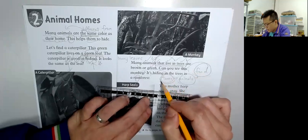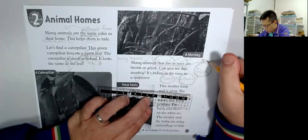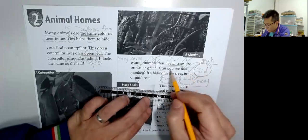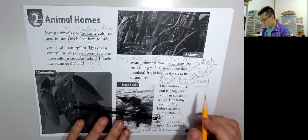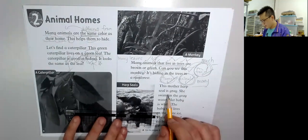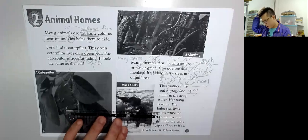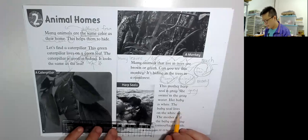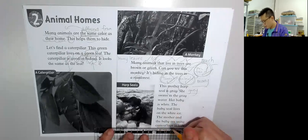There are many trees, there are many animals. Many 跟數到, much 跟數不到. This mother harp seal is grey. Grey 是灰色. She swims in the grey water, and her baby is white. The baby seal lives on the white ice. The mother and baby are using camouflage to hide.